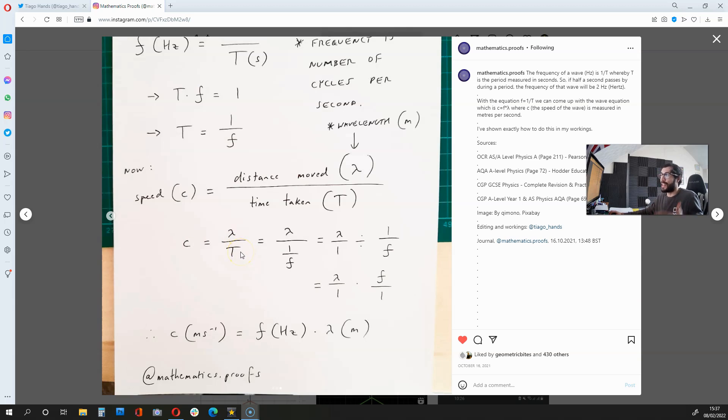But because t is 1 over f, what we get is lambda over 1 divided by 1 over f. And this is the same as lambda over 1 times f over 1, which is c equals f times lambda.